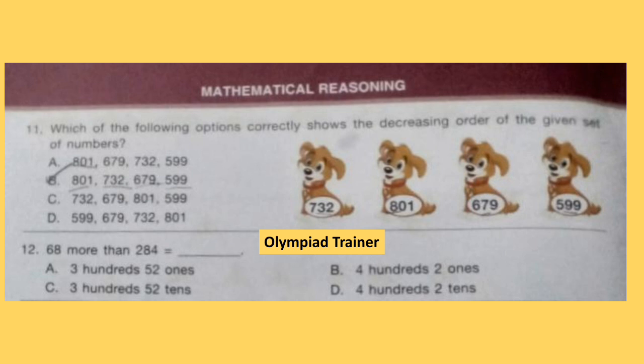The next section is Mathematical Reasoning. Question 11. Which of the following options correctly shows the decreasing order of the given set? Each puppy is carrying a number. Arrange them in decreasing order, so the highest number comes first and smallest at the end: 801, 732, 679, and 599. Option B is the answer.